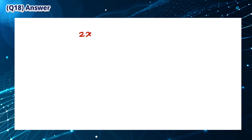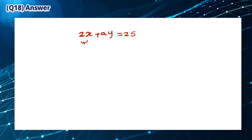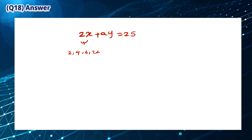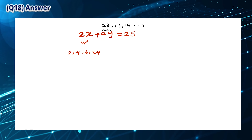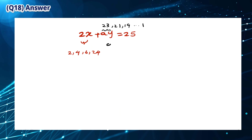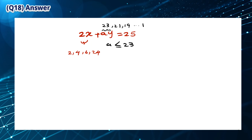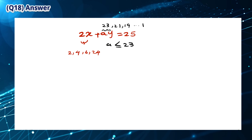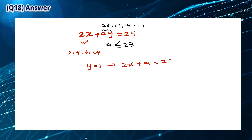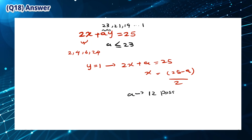Let A be the hidden coefficient and XY be a positive integer solution to 2X plus AY equals 25. Then 2X is one of the 12 even numbers 2, 4, up to 24, and AY will be one of the odd numbers 23, 21, 19, down to 1. So A is a divisor of one of these odd numbers, meaning A is odd and A ≤ 23. For each odd value of A from 1 to 23, there is at least one solution, giving a total of 12 possible values for A. The answer is B.